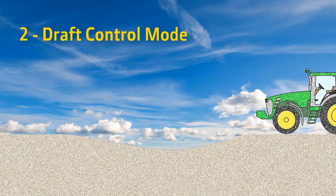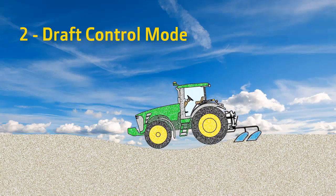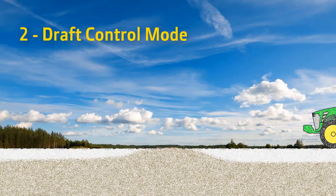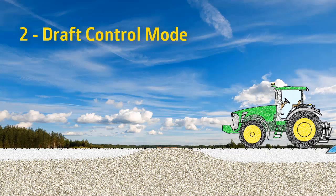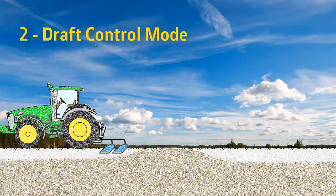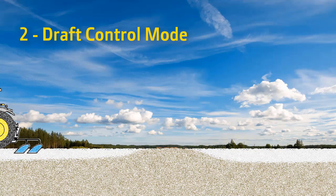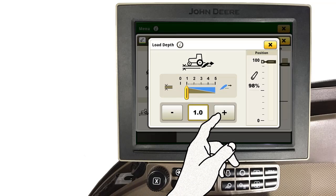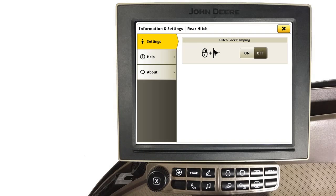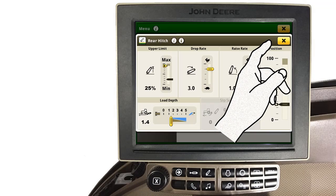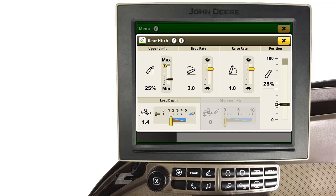When operating in rolling fields or in fields where soil conditions change rapidly from soft to heavy soils, draft control mode may be a better choice. Draft control mode will automatically lower and raise the implement in rolling terrain to keep draft loads or implement load consistent. Also, in changing soil conditions from hard pan soils to soft soil, draft control mode will automatically raise and lower the implement to keep draft loads consistent. To activate draft control mode, first adjust the load depth setting to a value somewhere between one and five. The help page will provide suggestions for different types of implements.